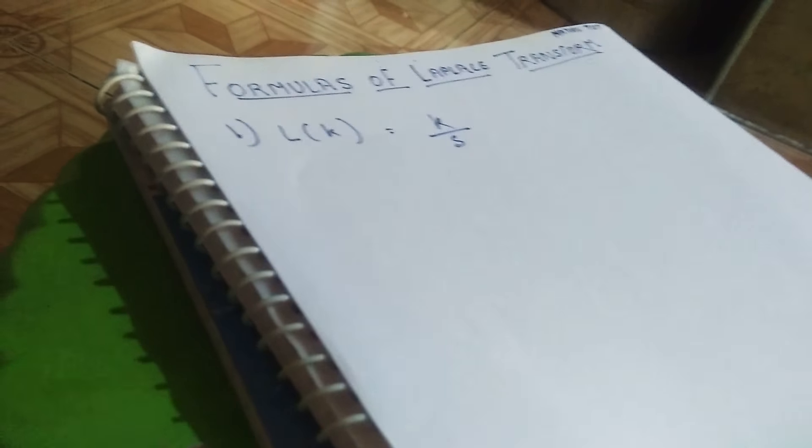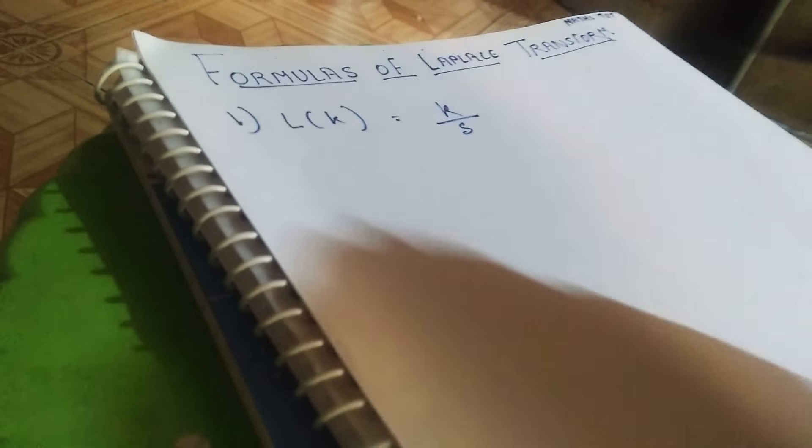Laplace of k. The Laplace of a constant is k by s, constant by s. If my k is 1, then it would be 1 by s.